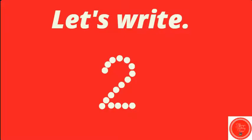First, let's start by writing the number two. For the number two, we're going to start here. We're going to curve and go down and then make a line across. Can you try the number two on your paper or whiteboard? We're going to make kind of a hook at the top, go down and across. You can pause the video to practice more twos.